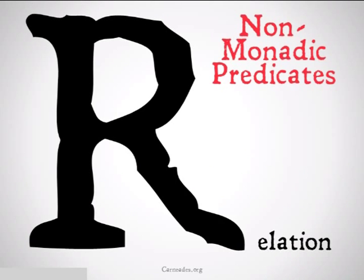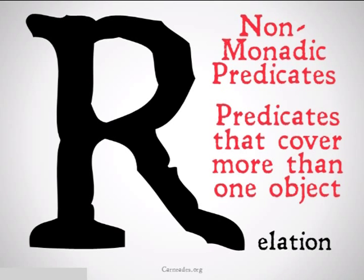Relations are defined as non-monadic predicates. Basically, they're just predicates that cover more than one object. For example, 'to the left of' can't just cover one thing — something can't just be 'to the left of.' It has to be to the left of something else. There has to be more than one object involved in that relation. You can have relations with three, four, or any number of objects. If you want more information on relations and their properties, check out the video on properties of relations.